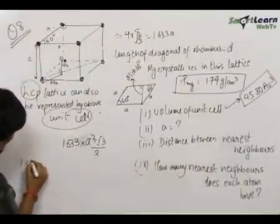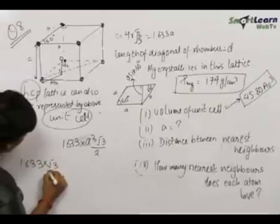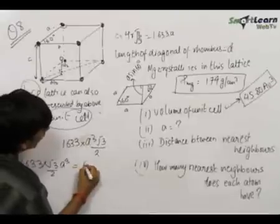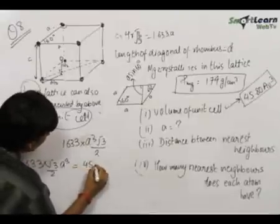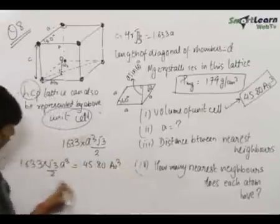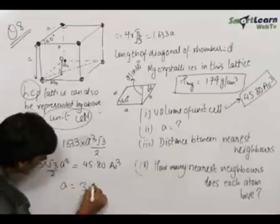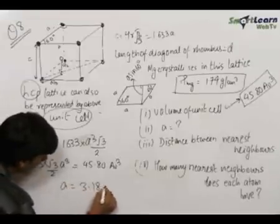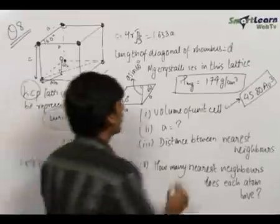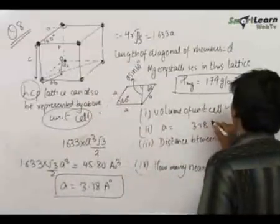Setting 1.633 × (√3/2) × A³ = 45.80 Å³ and solving, the value of A comes out to be 3.18 Å. So our answer for the unit cell length A is 3.18 Å.